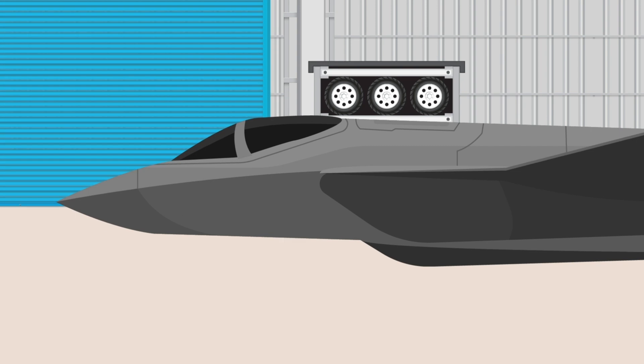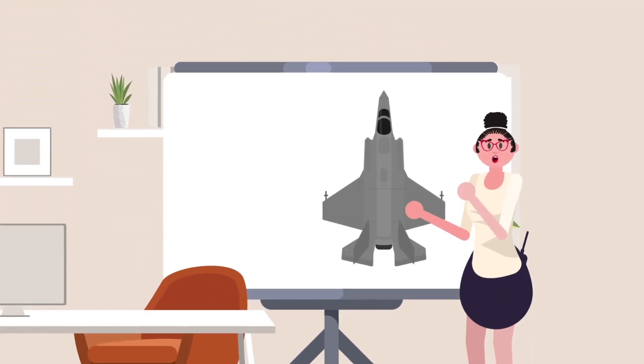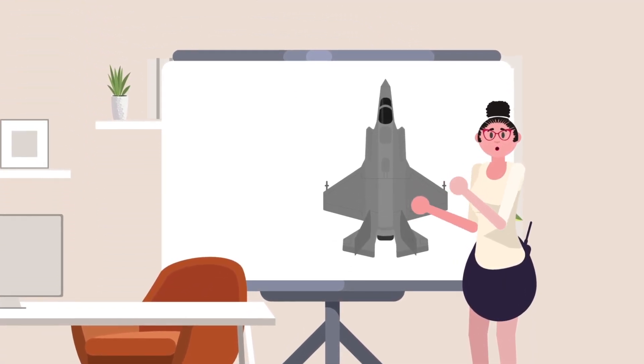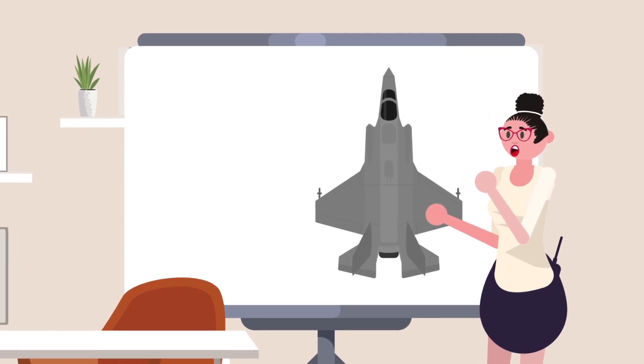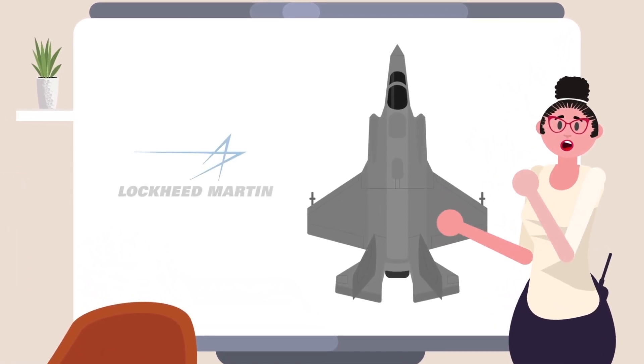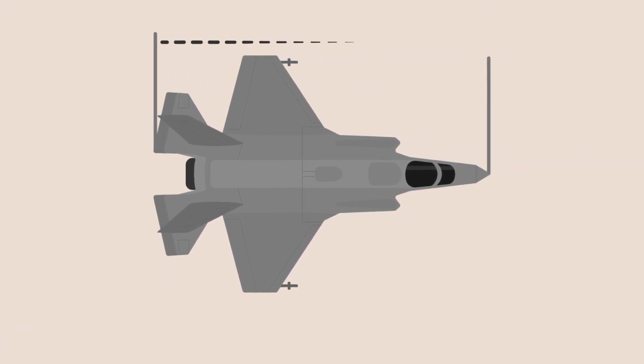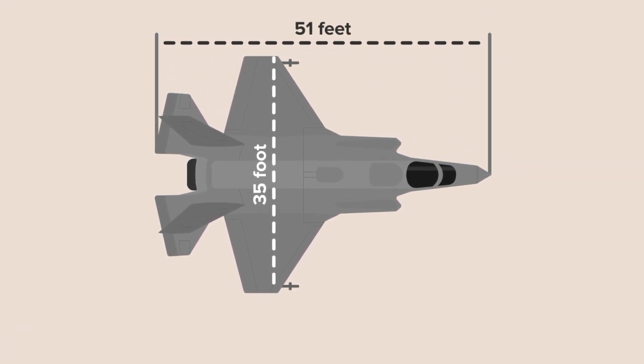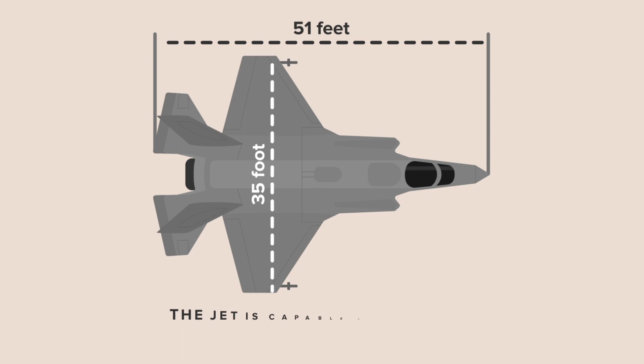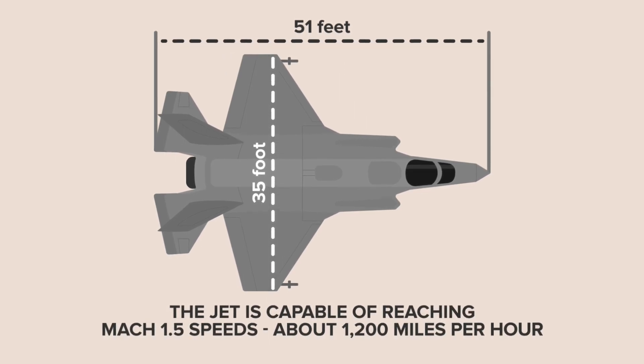The F-35 is the US Air Force's current state-of-the-art multi-role fighter jet with some truly impressive features, and it was designed by aerospace giant Lockheed Martin in 2006. The jet, which is 51 feet long with a 35-foot wingspan, is capable of reaching Mach 1.5 speeds, just about 1,200 miles per hour.